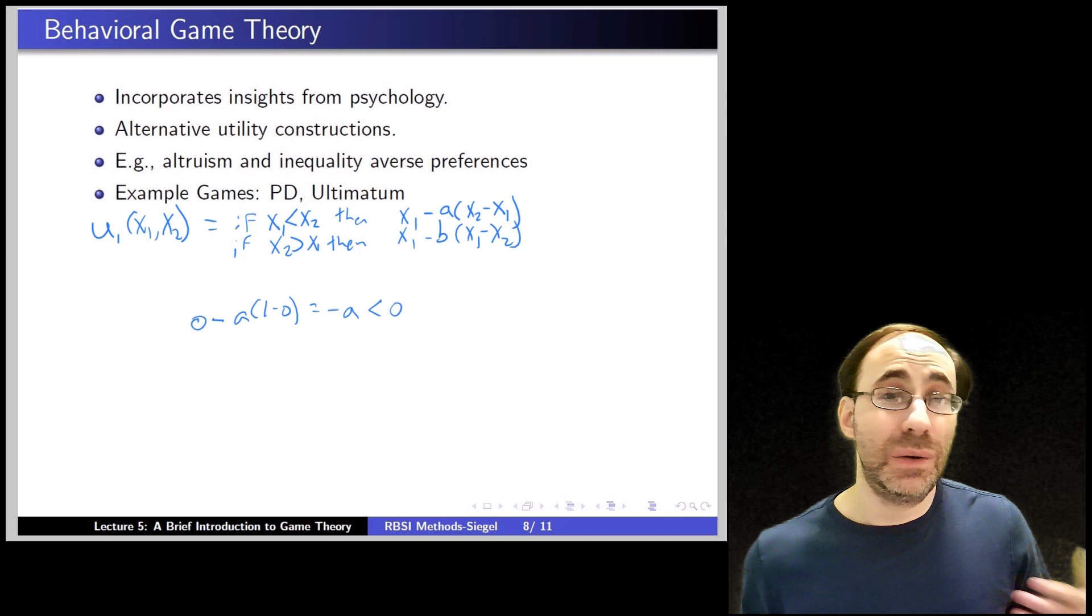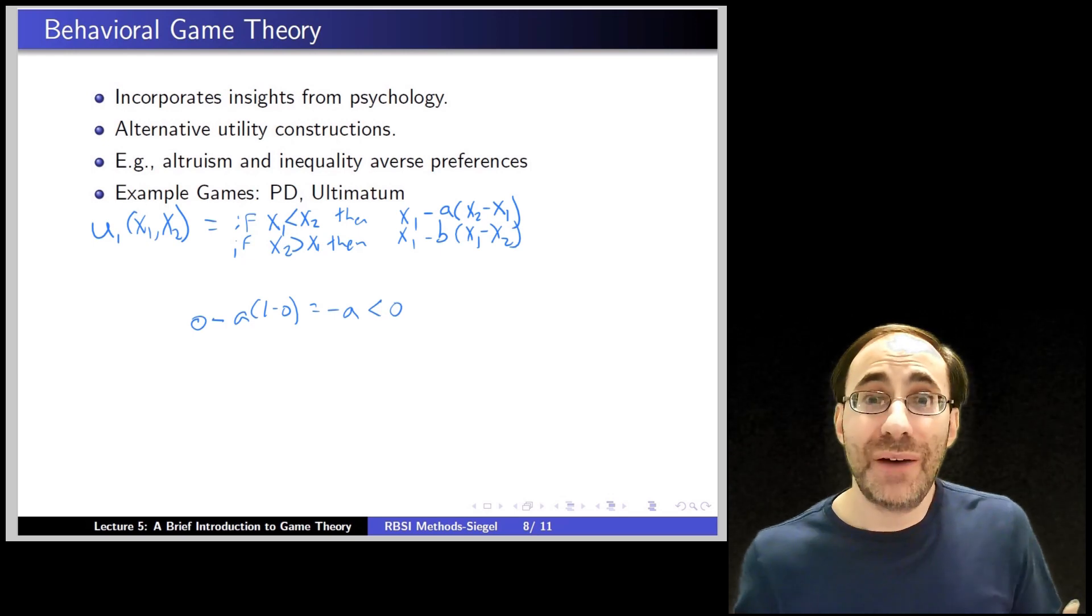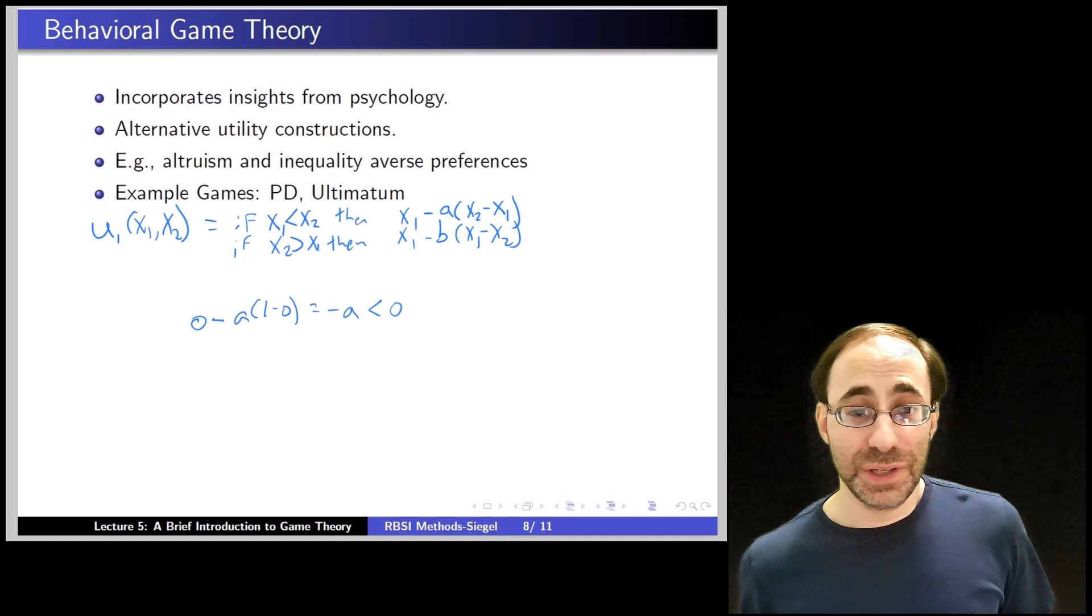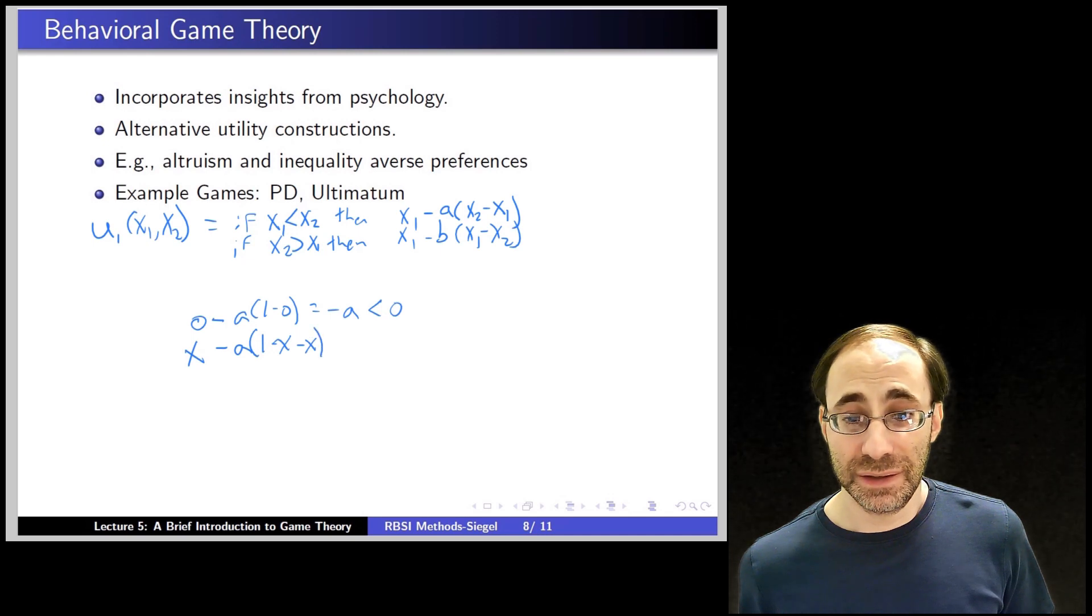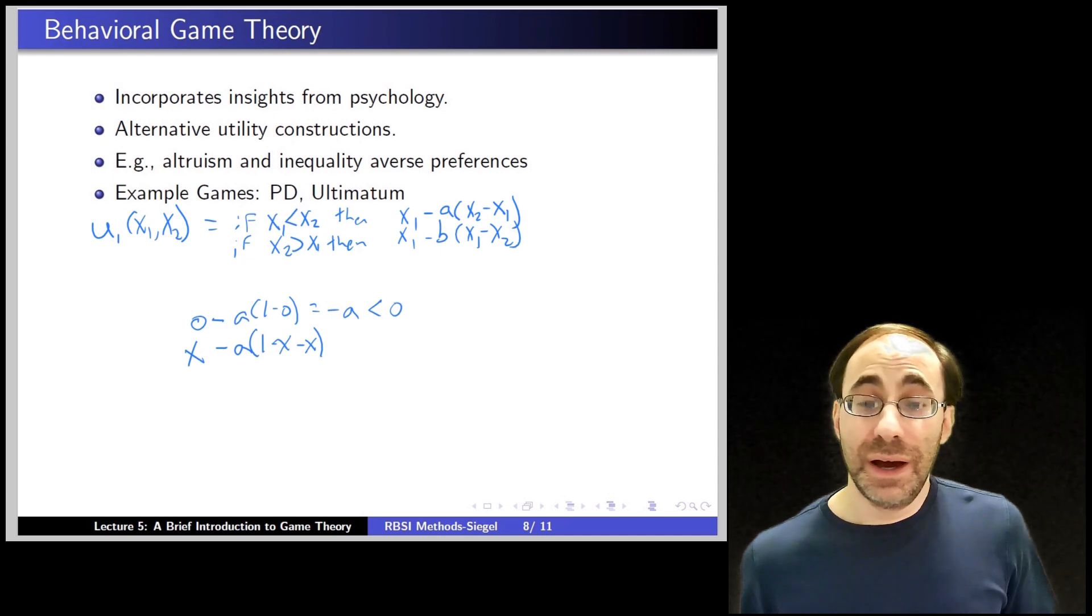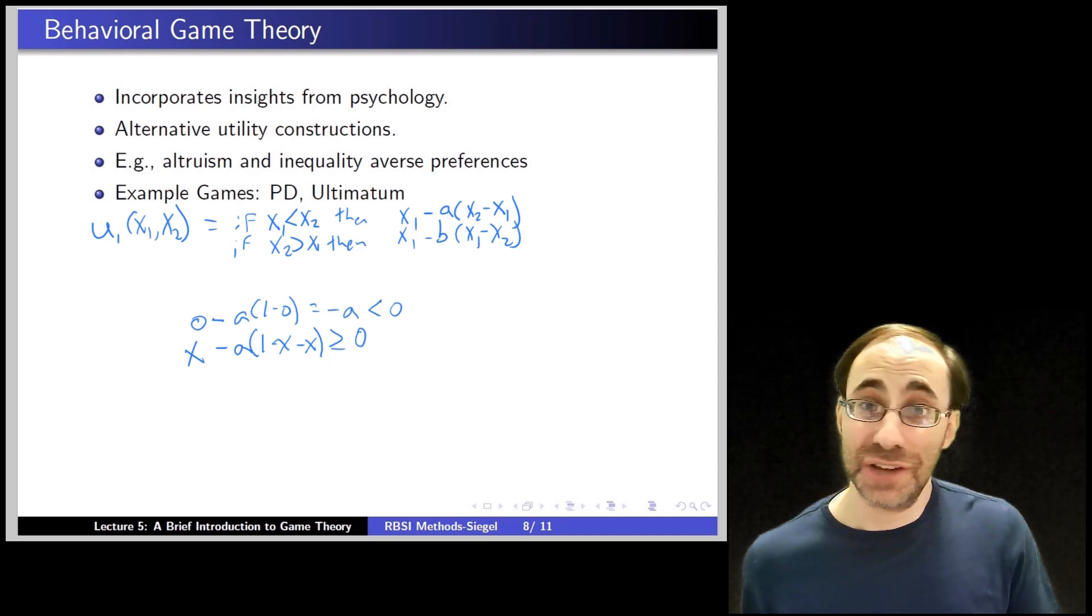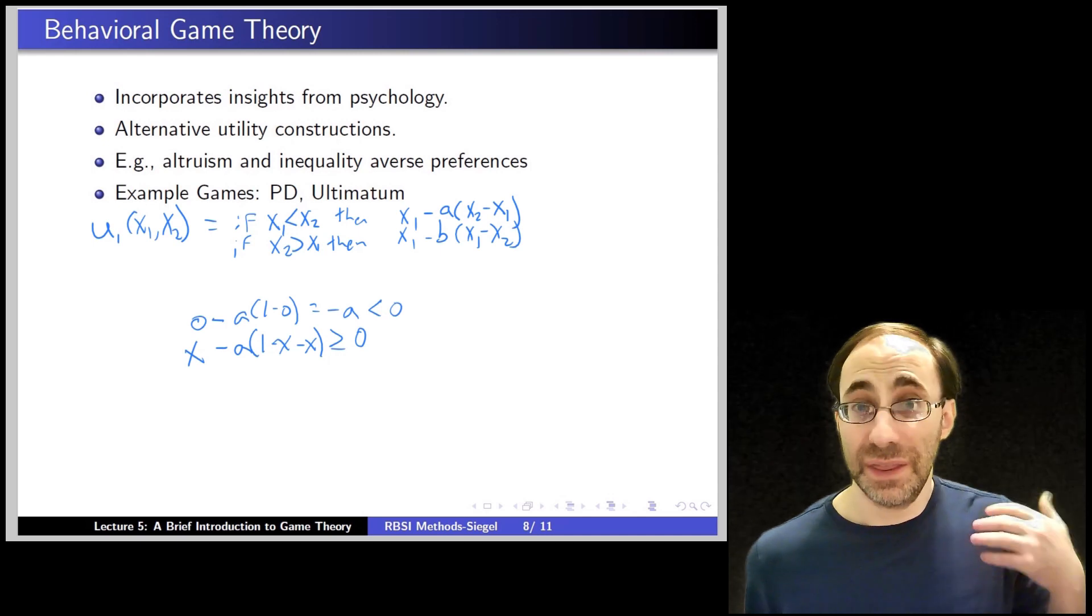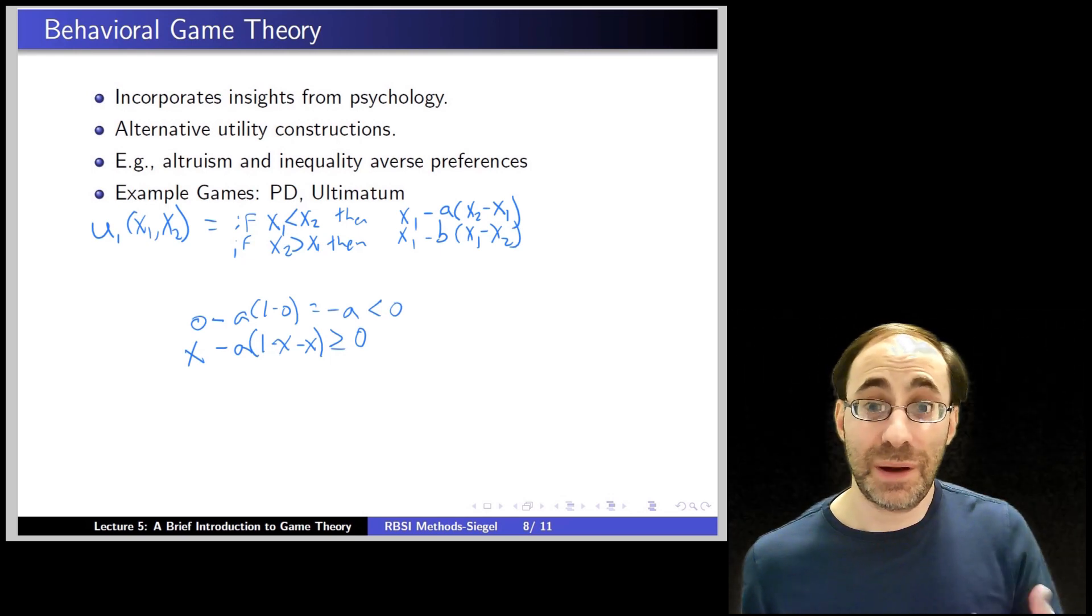Since both players are rational in this case, player one will not want to have you reject the offer and get zero. Player one will see how much player one can still get while having you accept the offer. So what's that amount? It's some x that they offer to you, such that the difference between their payoff, which is 1 minus x, and your payoff, which is x, gives you utility given these inequality-averse preferences, and as long as that's bigger than zero, you're willing to say yes. Your other option is to reject and get zero. So as long as the utility you get from their actions is greater than zero, you will accept.